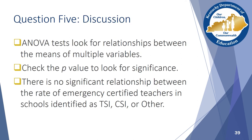The reporting on the previous screen shows how the results of an analysis of variance test are often reported in scholarly journals. Remember that an ANOVA test looks for the relationship between the means of two or more variables. You can tell this is an ANOVA test because it is reported with a capital F. If you look at the p-value, you can see that p equals 0.133. In order for it to be significant, p must be less than 0.05. So these results tell us that there is no significant relationship between the rate of emergency certified teachers in schools identified as TSI, CSI, or other.